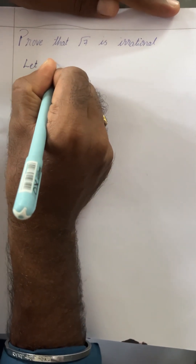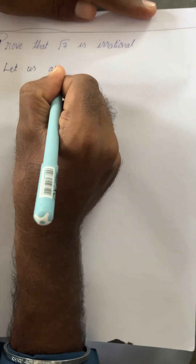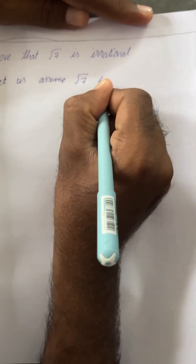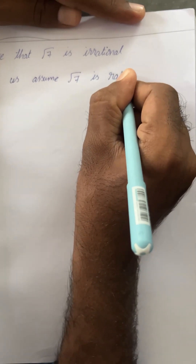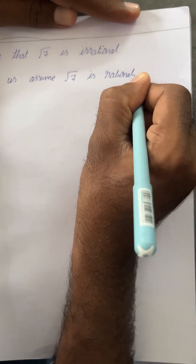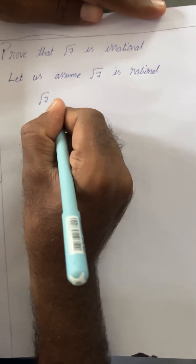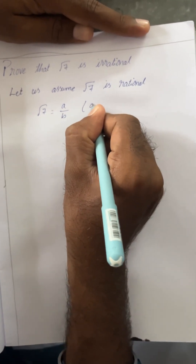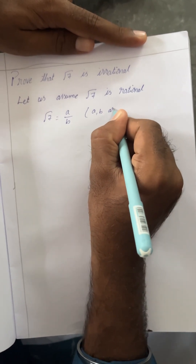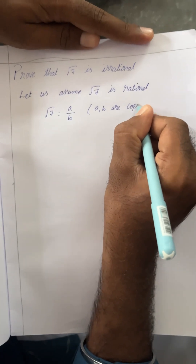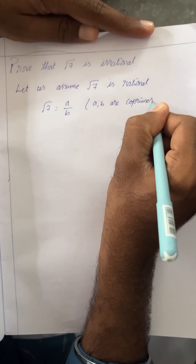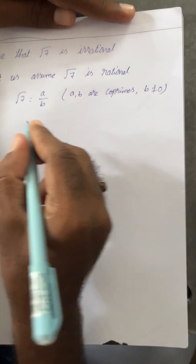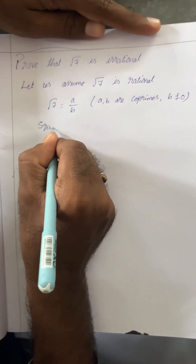For this, we will assume the contradictory factor — let us assume that root 7 is rational. A rational number is in the form of a by b. So now I am writing: root 7 is equal to a by b, where numerator and denominator are co-primes and denominator is not equal to 0. That is, a and b are co-primes and b is not equal to 0.